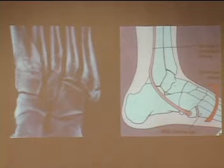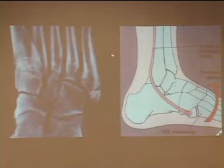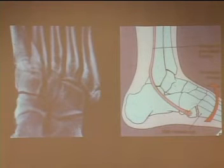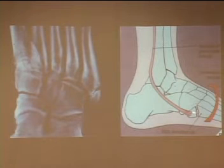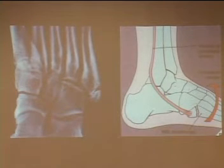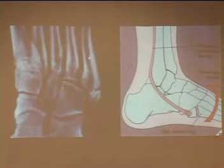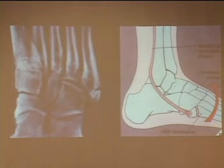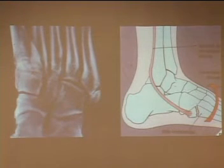One thing that will periodically come up is the distinction between an avulsion fracture and a Jones fracture. Quite often this is simply the result of a rolled ankle causing pressure along the peroneus brevis, producing an avulsion fracture at the base of the fifth metatarsal. That is relatively straightforward and, as long as there is no displacement, can be casted fairly easily. However, if the injury is along the shaft more distally, that is considered a Jones fracture — which carries a high risk for nonunion or malunion and therefore needs to be referred out.